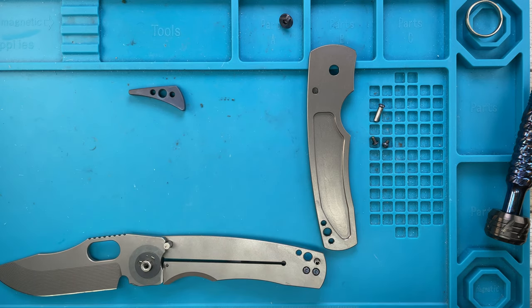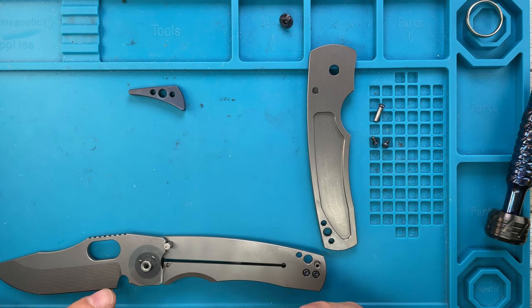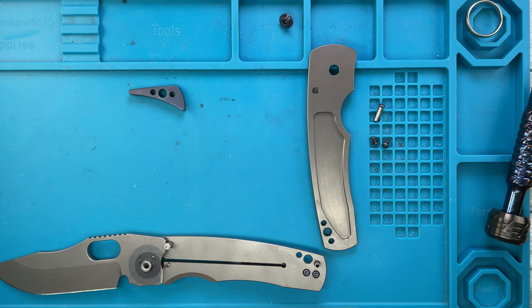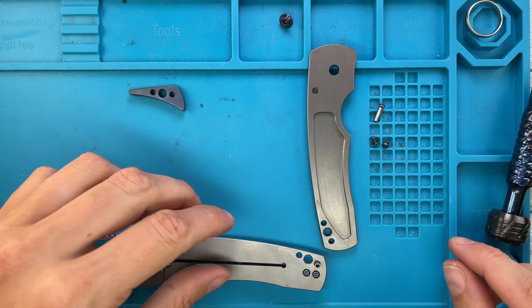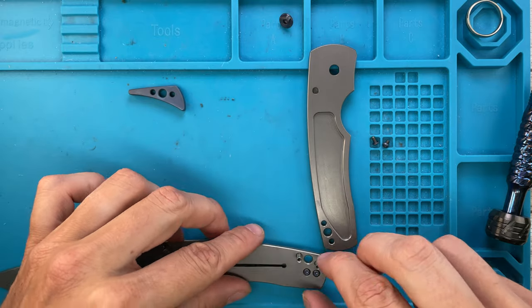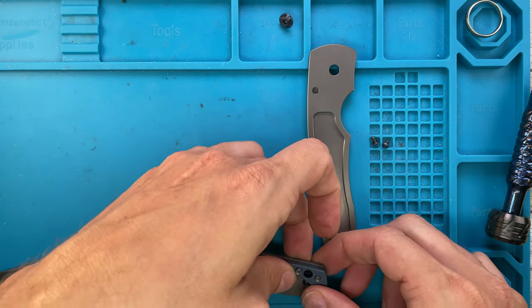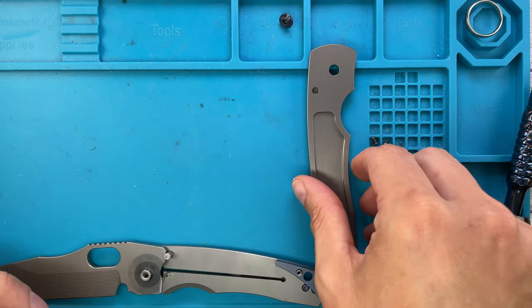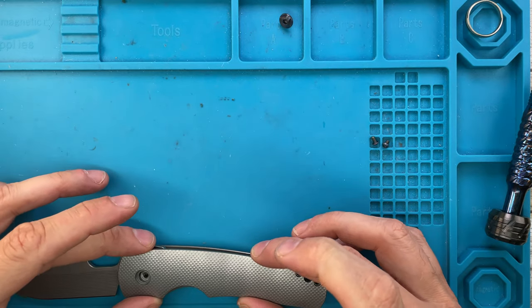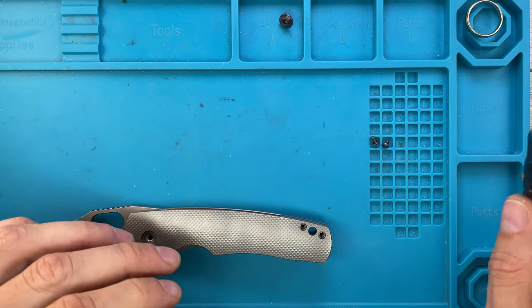And that is done for that. I'll just do a little bit of heavier weight on the detent ball. Then we've got to pop this screw in. Backspacer is also in.